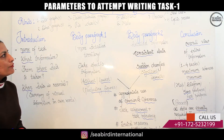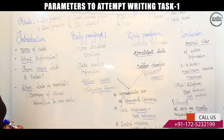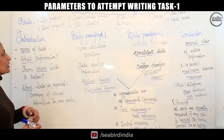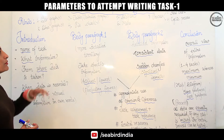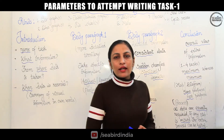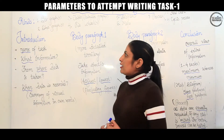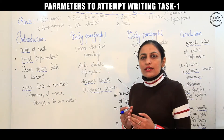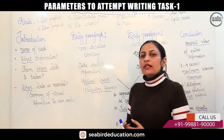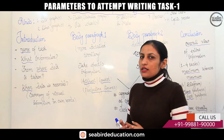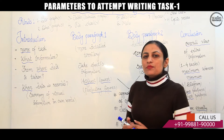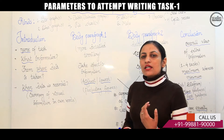First of all, I will introduce the different kinds of writing task 1 in academic IELTS. First, it can be a bar graph or graphs. Second, it can be a line graph or line graphs. Third, you can write a table or a tabular chart. Never write 'table chart' — you can go for only 'table' or 'tabular chart'. So many students make mistakes over here.